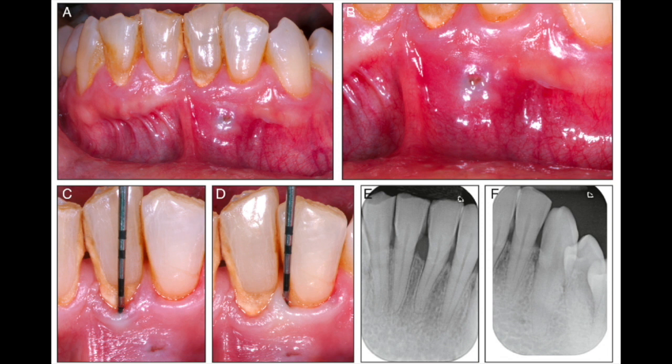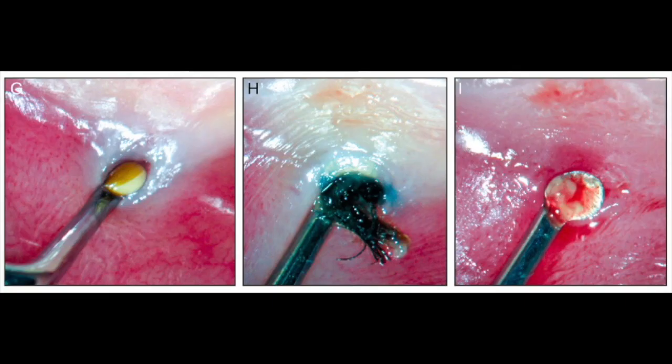The endodontist suspected endodontic involvement because of the discrete drainage-like exudate. However, the adjacent teeth were caries-free, they responded positively to the pulp test, and the periapical tissue was radiographically normal. So he explored the lesion, opening it under an operating microscope.